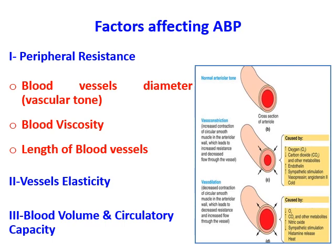Sometimes circulatory capacity may decrease due to vasoconstriction, seen with certain drugs, sympathetic activity, or the presence of certain hormones. This vasoconstriction decreases circulatory capacity, which is accompanied by an increase in arterial blood pressure.